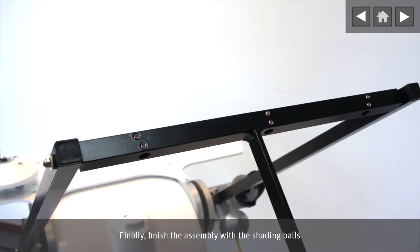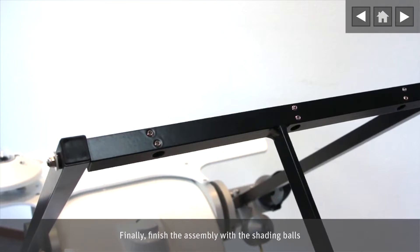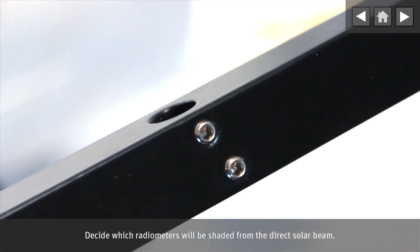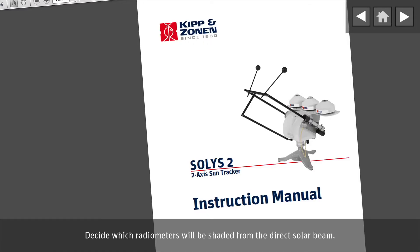Finally, finish the assembly with the shading balls. Decide which radiometers will be shaded from the direct solar beam.